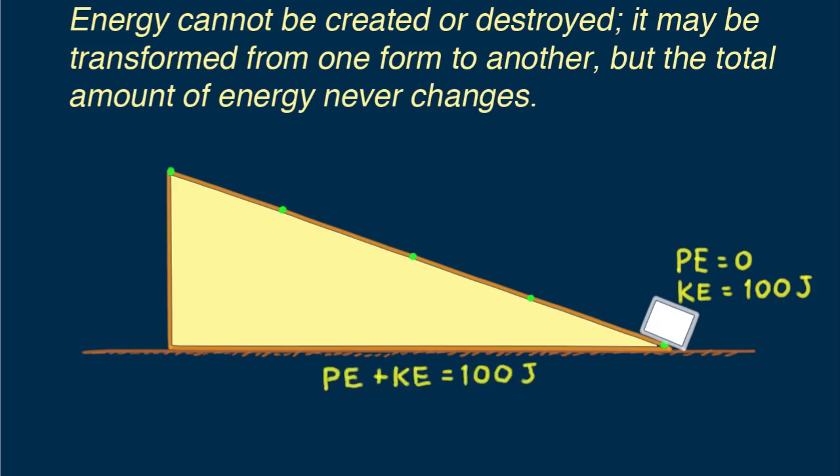What we see is the total energy is the same at each location. That is, the sum of potential energy plus kinetic energy equals 100 joules.